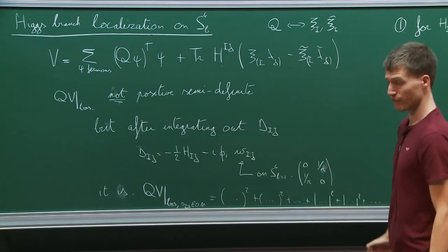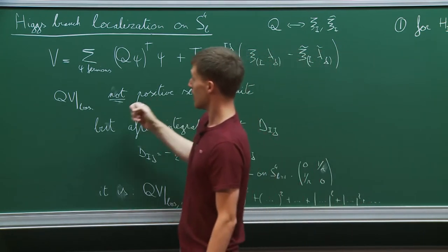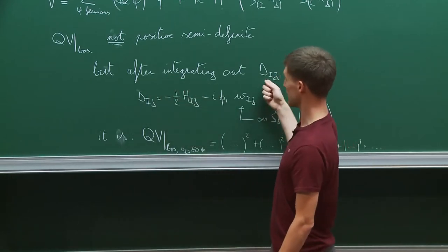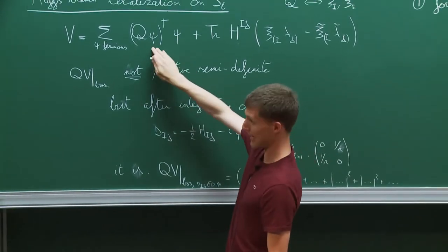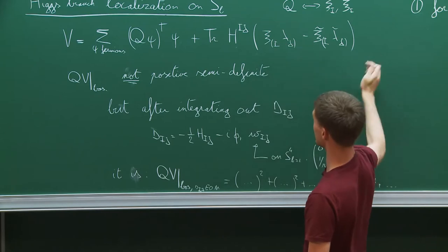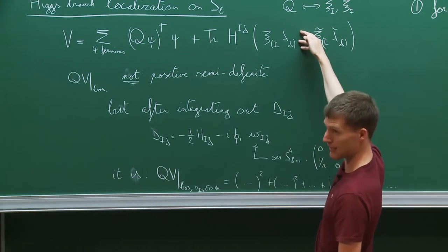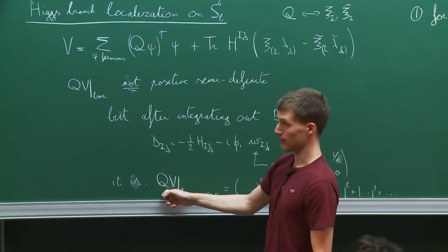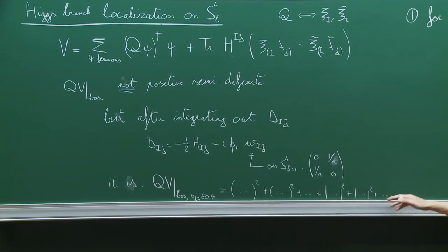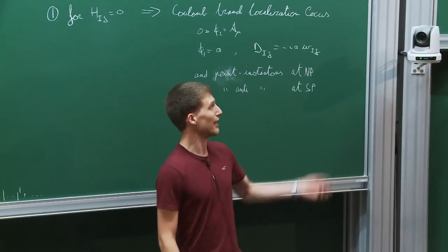With this extra term the deformation is not positive semi-definite anymore. But as I explained yesterday, and as you heard this morning from Francesco, after you integrate out the auxiliary field — which enters quadratically here and linearly here, simply because the variation of the gaugino is linear in the auxiliary field — you find an equation of motion which, when imposed, makes the bosonic part of the deformation term a sum of positive terms again.